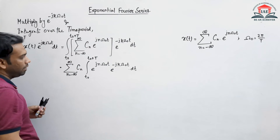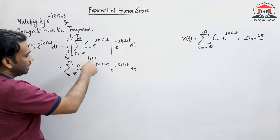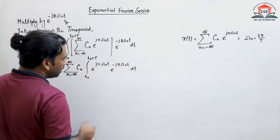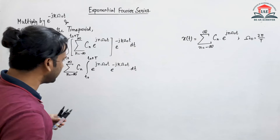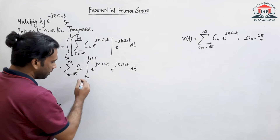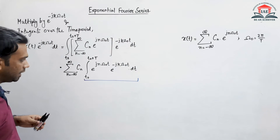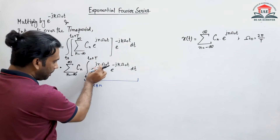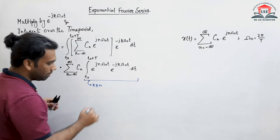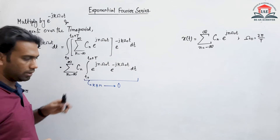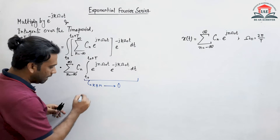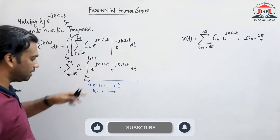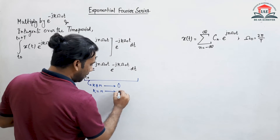Now we take the summation Cn outside the integral. The integral becomes from t0 to t0 plus capital T of e^(j·n·omega_0·t)·e^(-j·k·omega_0·t) dt. We have to use the integration identity: if k is not equals to n, then the value of this integration will be 0. This comes from the integration property.